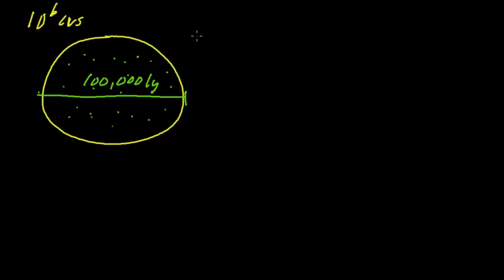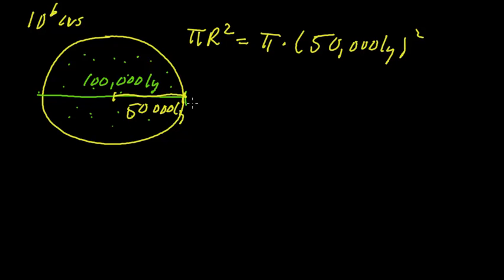So here we go. The area of a circle is pi r squared. So we have pi times 50,000 light years squared. That's the radius from here to there is 50,000 light years. I'm going to make a few approximations here. I'm going to say pi is basically 3. 5 squared is 25 times 3 is 75. So this is about 80. And then this part is 10 to the 4th. So you square that and you get 10 to the 8th.